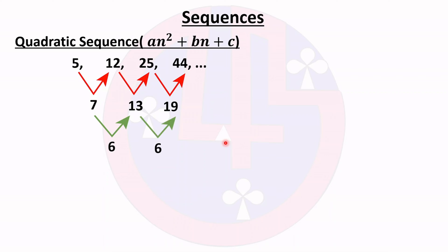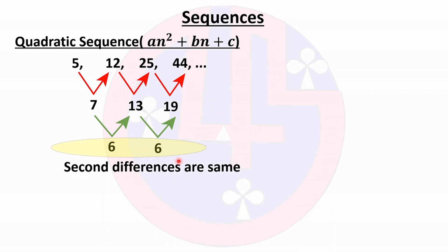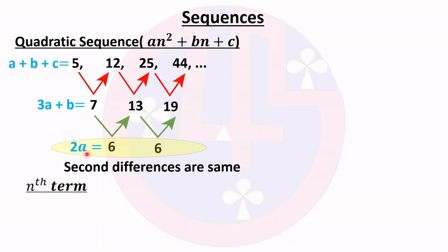The second differences are the same, which means the sequence is a quadratic sequence. To find the nth term, we use the format: 2a = 6, 3a + b = 7, and a + b + c = 5.